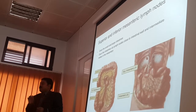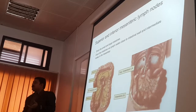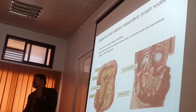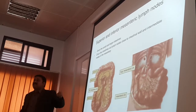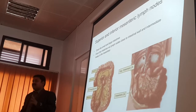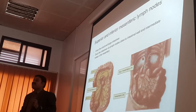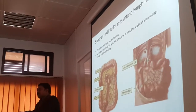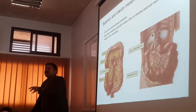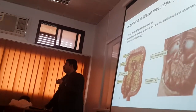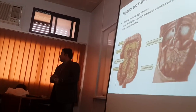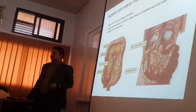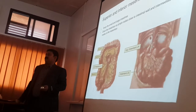The color of lymph from the intestine is turbid or milky white, unlike the clear or colorless lymph from other regions. This is because intestinal lymph contains fat globules absorbed from the gut. This is why it appears turbid — the presence of fat makes it look different from lymph elsewhere in the body.